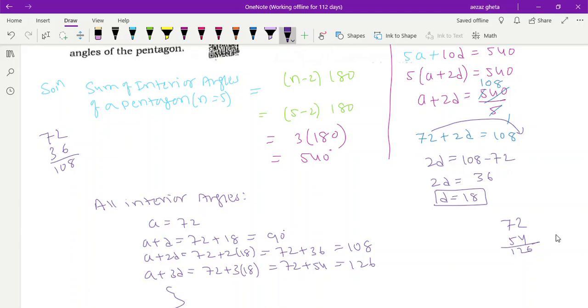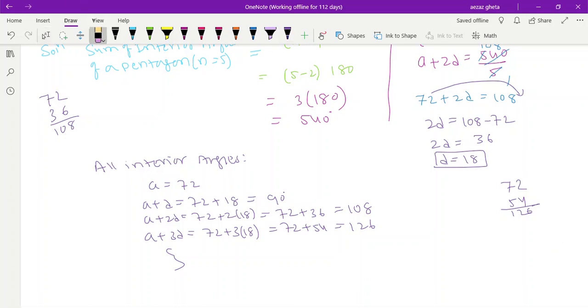72 plus 54 equals 126. And a plus 4d equals 72 plus 4 into 18, that's 72 plus 72, which is 144. If you add all these angles, you should get 540 for sure. 72 plus 90 plus 108 plus 126 plus 144 equals 540. Understood?